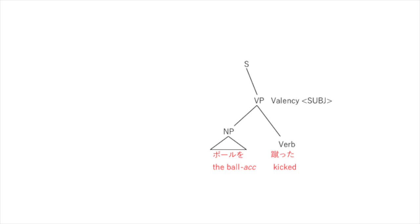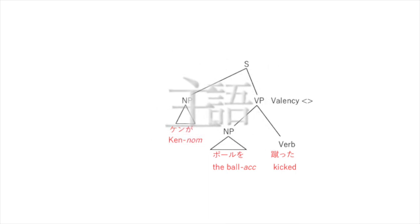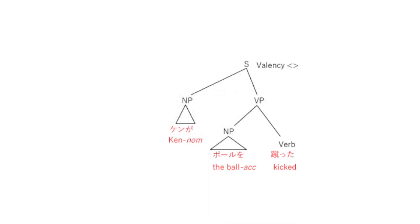We just have the subject, and we can make a sentence, which is a big verb phrase. The verb wants a subject and we're going to give it one. Here it is coming up — it's another noun phrase: ken ga. That's nominative case and it's a subject. Valency is empty. It's a sentence. Ken kicked the ball.